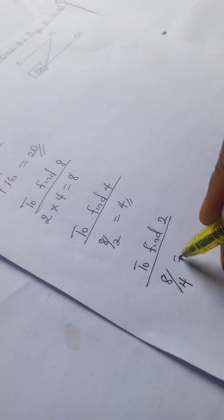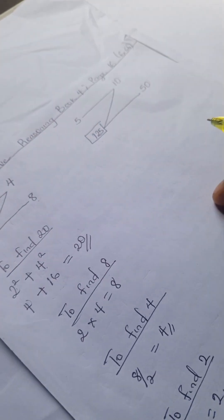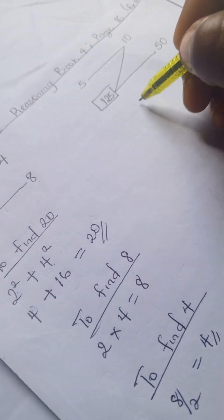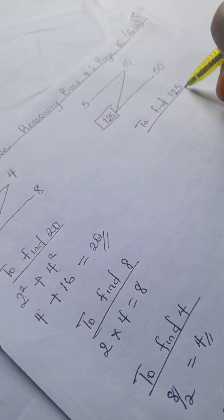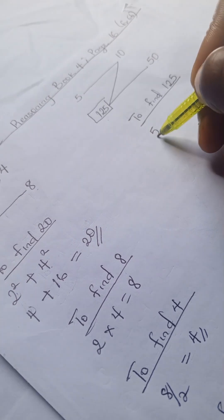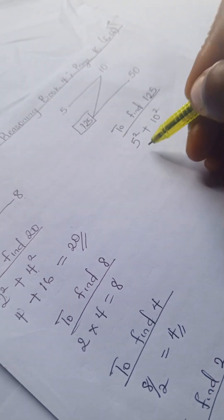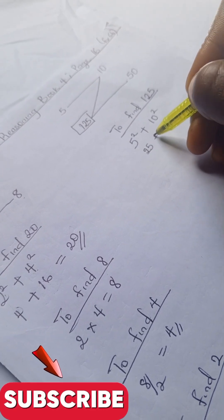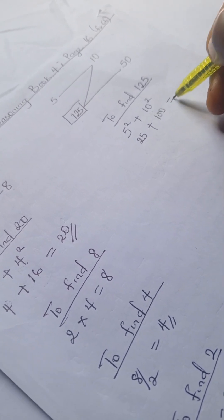Let's go through this example. To find 125, we have 5 squared plus 10 squared. 5 squared is 25, that's 5 times 5, plus 10 times 10 equals 100. And 25 plus 100 gives us 125.